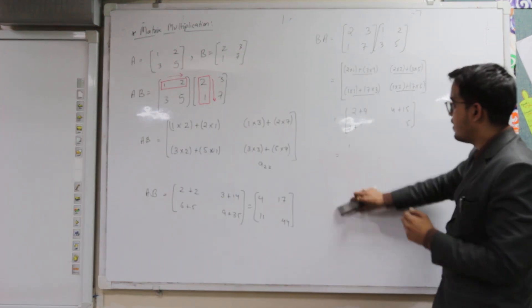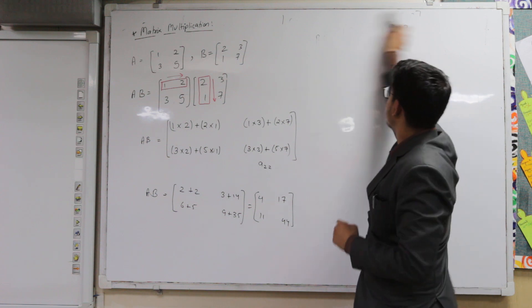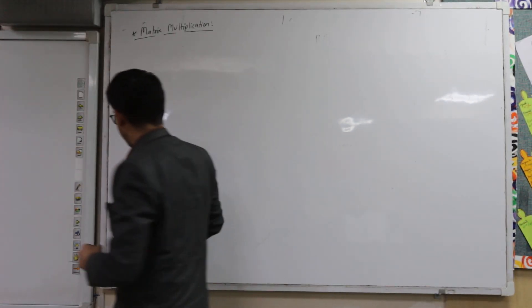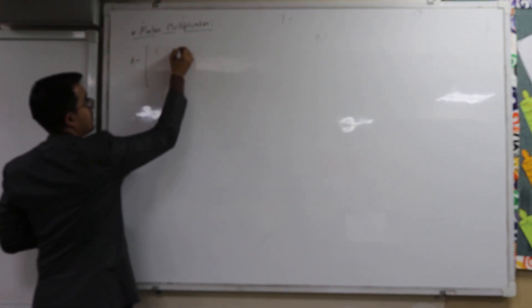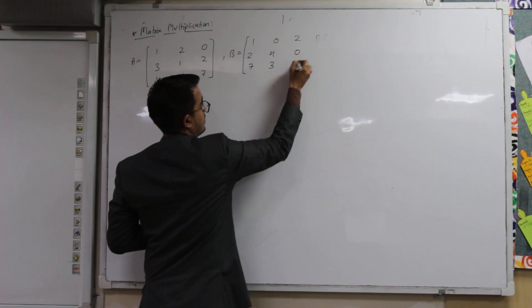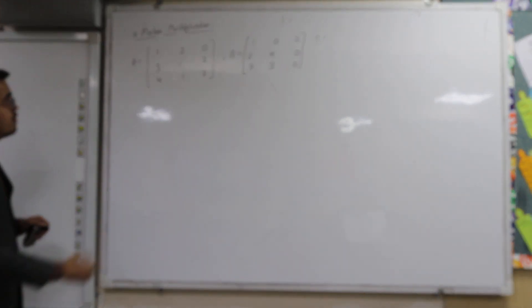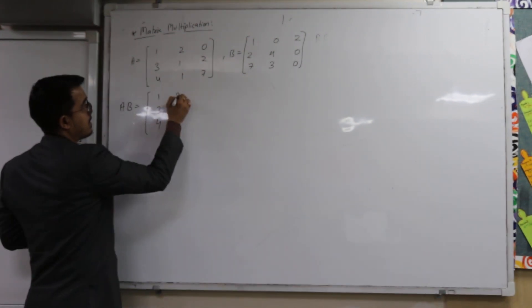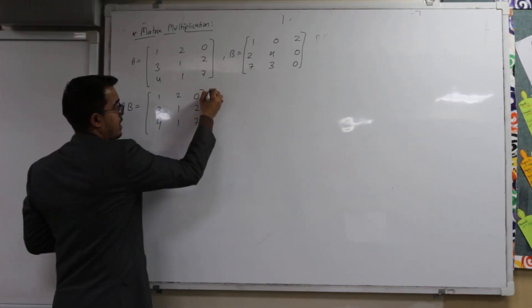Let us take one more example — a 3×3 matrix. Let A be a matrix with elements 1, 2, 0, 3, 1, 2, 4, 1, 7 and B be a matrix with elements 1, 0, 2, 2, 4, 0, 7, 3, 0. Now we will multiply and find A into B, writing both matrices side by side to help us move right and downwards.